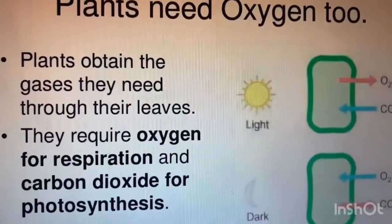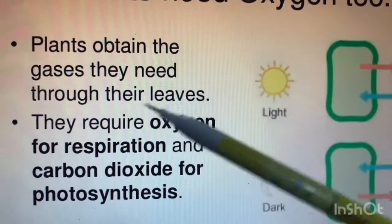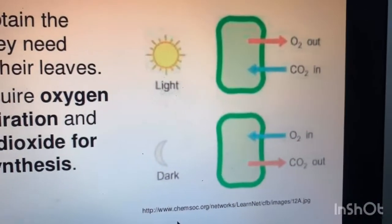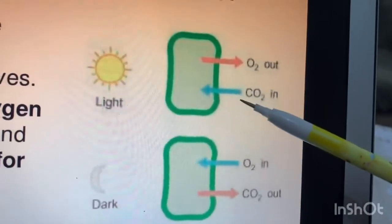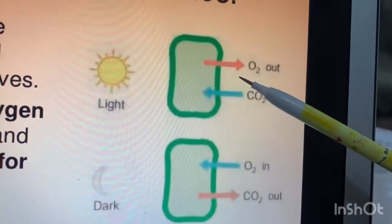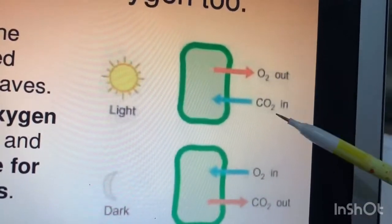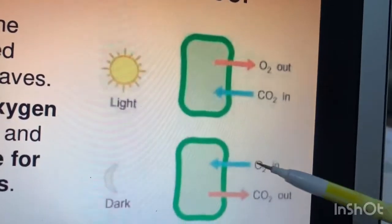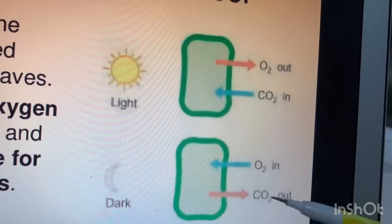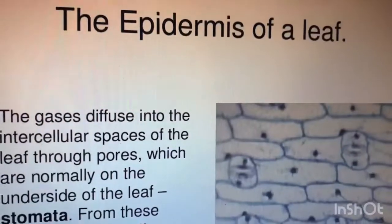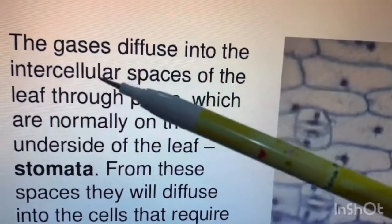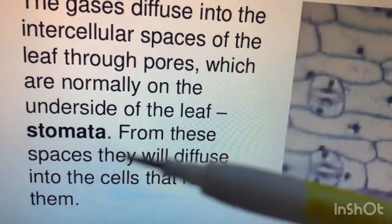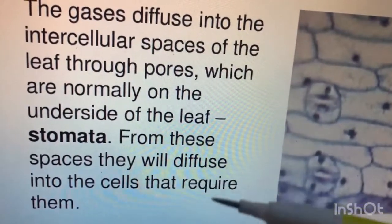Plants obtain the gases they need through their leaves. They require oxygen for respiration and carbon dioxide for photosynthesis. In the presence of light, when photosynthesis is faster than respiration, carbon dioxide diffuses in while oxygen diffuses out. These gases diffuse into the intercellular spaces of the leaf through pores, which are normally on the underside of the leaf, called the stomata. From these spaces, they diffuse into the cells that require them.